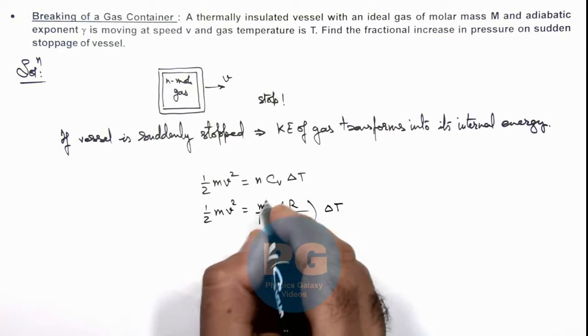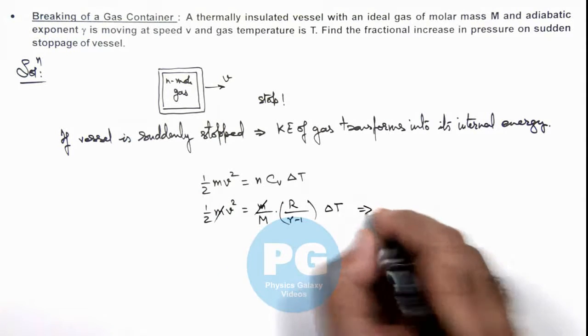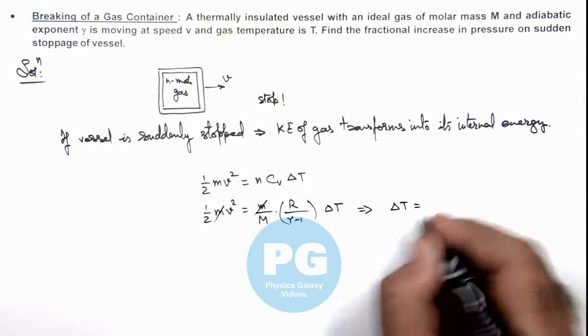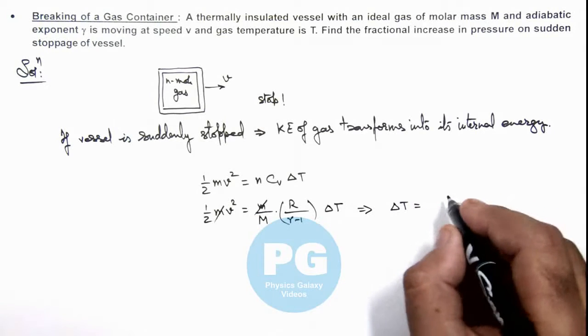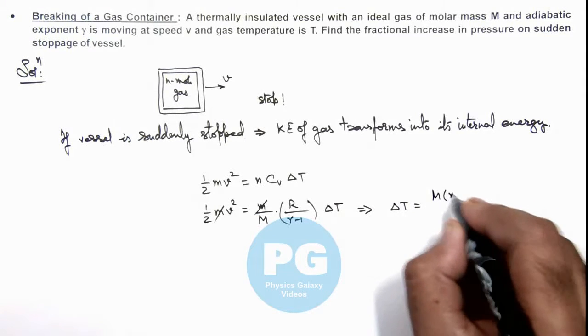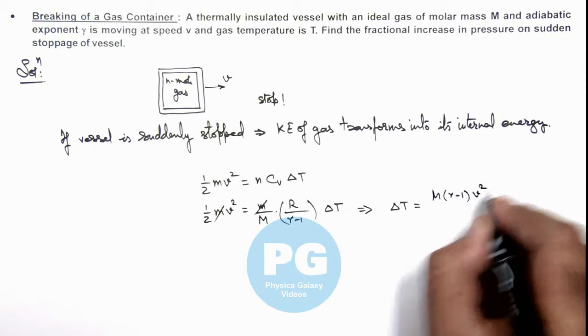So this directly gives us the value of rise in temperature, which is m gamma minus 1 v squared by 2R.